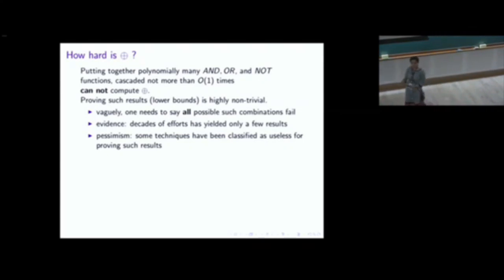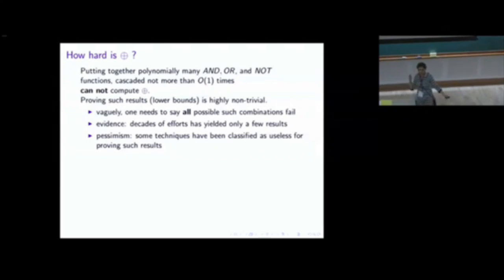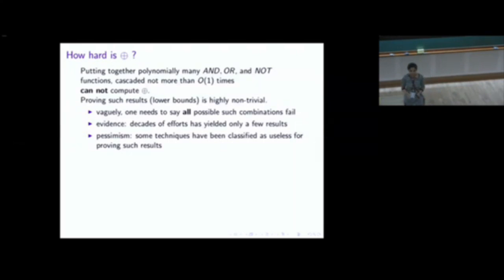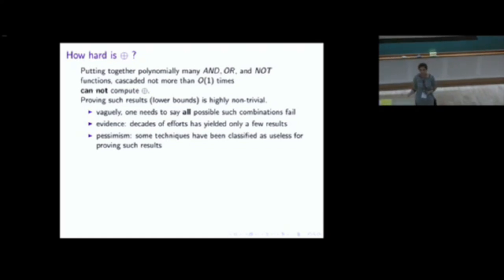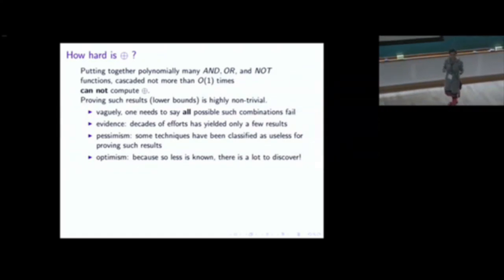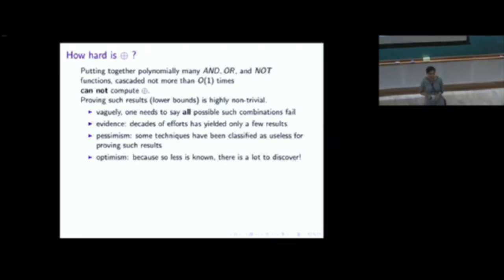There are people who have taken a pessimistic approach: in the 1990s, a paper showed that the kind of techniques used to prove lower bounds are themselves a roadblock — these are barrier results. They say: if you stay within these techniques, give up hope of separating P from NP. But people remain optimistic and continue trying to solve these problems, since so much remains unknown.